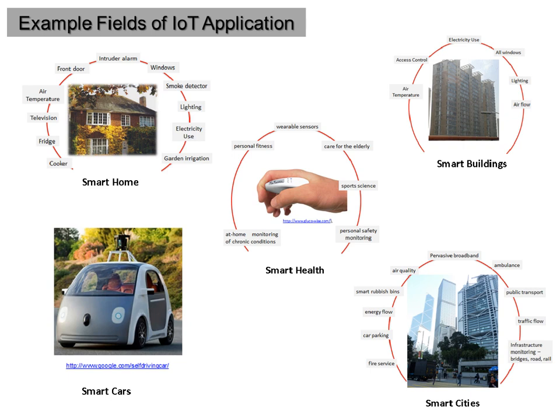Here are example fields of IoT application. Top left, we can make a house into a smart home — all the appliances in the kitchen, the fridge, the cooker, the microwave, can be rendered smart, can connect with each other, with their suppliers, with the people who fix them, with the homeowners. The entertainment system, air conditioning, climate control, and household security can all be connected together.